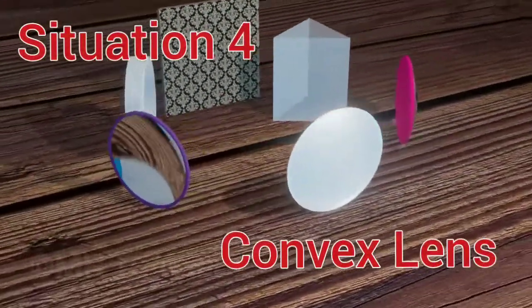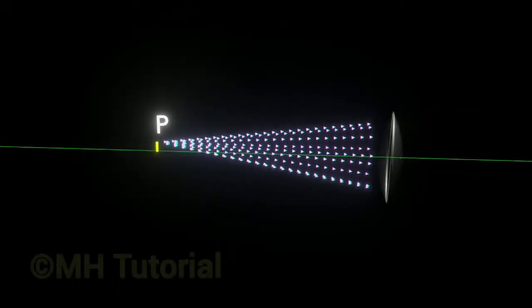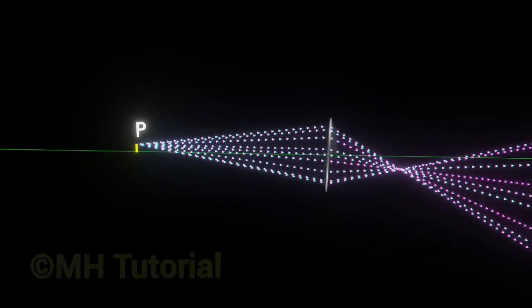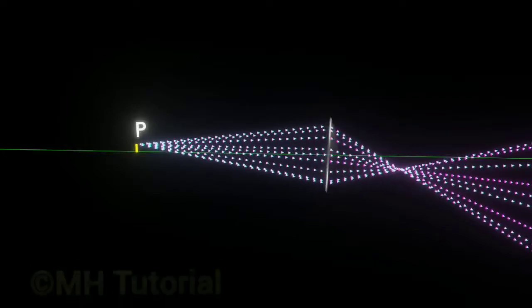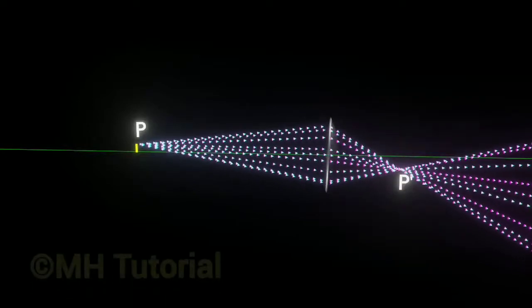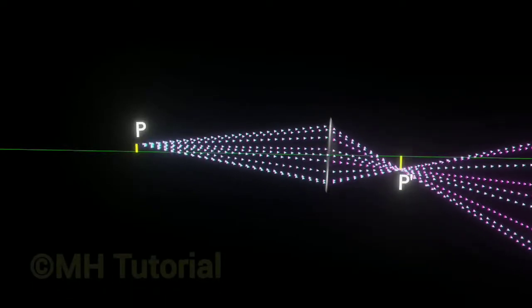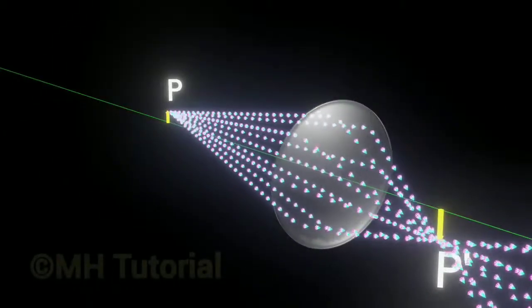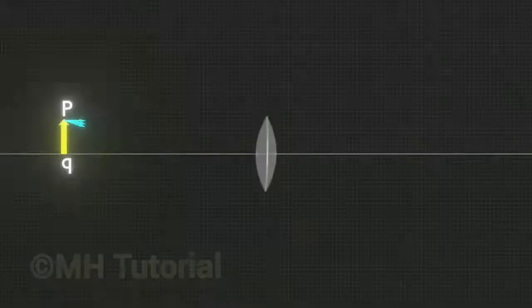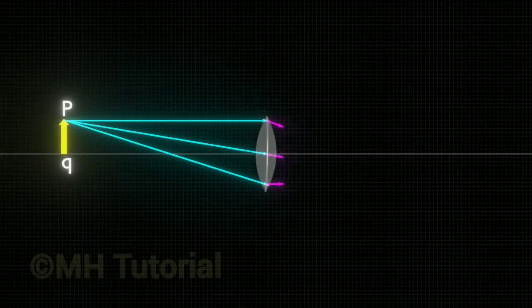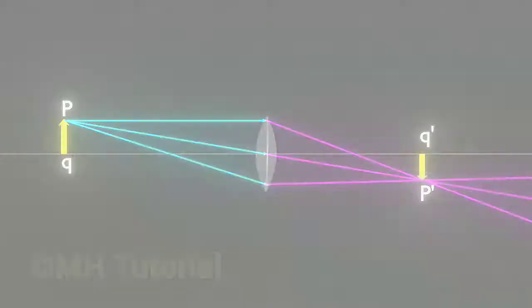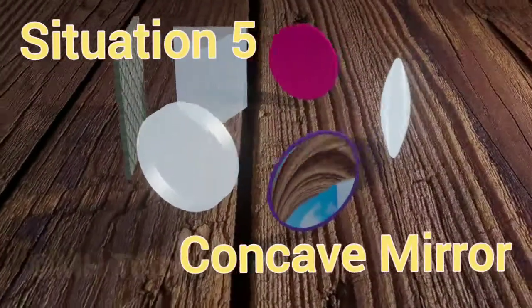Now we will see the image formation in a convex lens. Here too the rays are refracted through, however the refracted rays do not spread — instead they all converge into a point. At that point of convergence, an image of the point P will be formed. Above the point P dash, an image of the entire arrow is generated. This image is inverted with respect to the object.